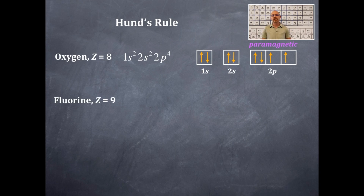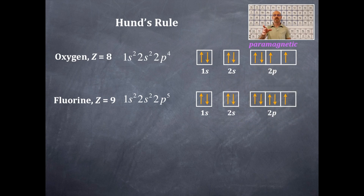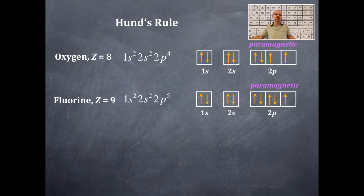Next is fluorine. The electron configuration is 1s², 2s², 2p⁵. Filling the boxes: up, down for 1s; up, down for 2s; then for the 2p: up, up, up (half-fill), then down, down to backfill. Fluorine has one unpaired electron in its last 2p box, making it paramagnetic — attracted to a magnetic field.